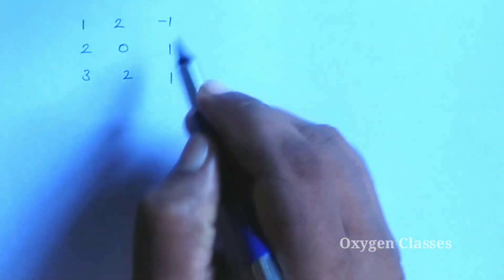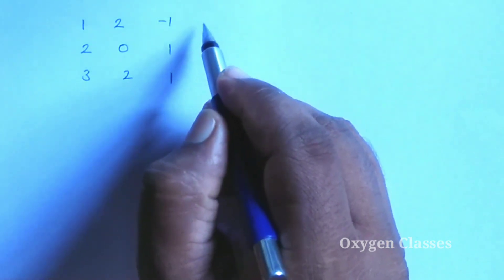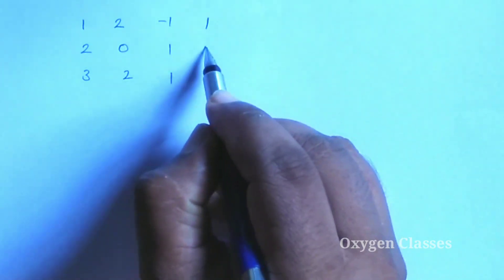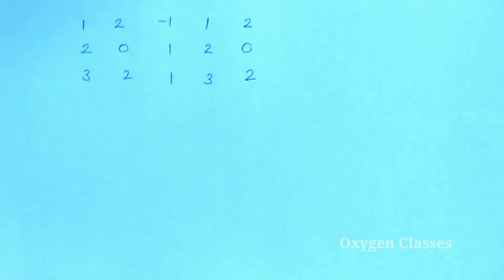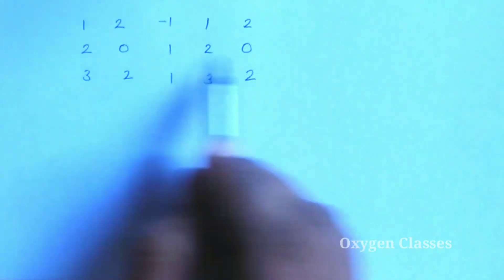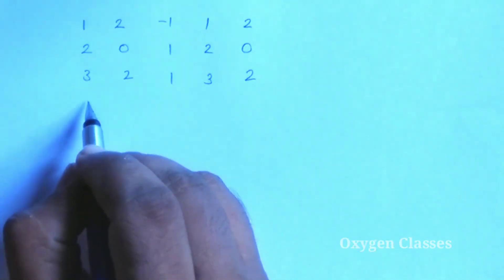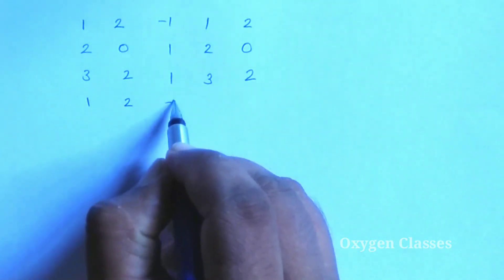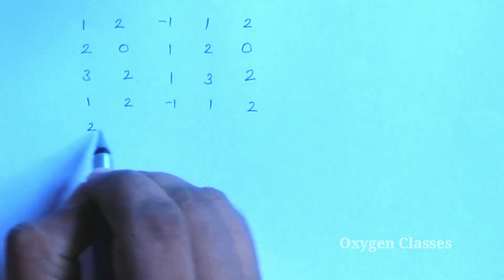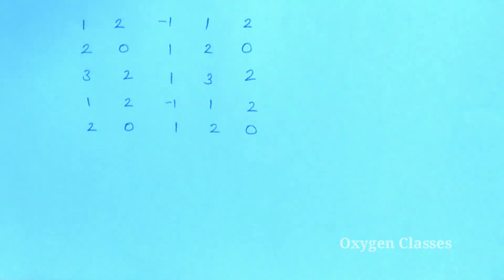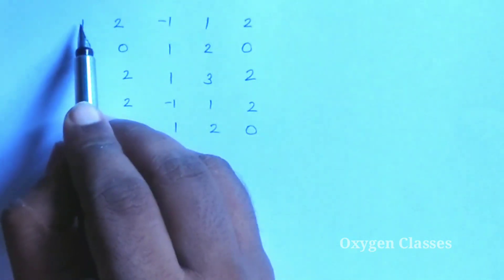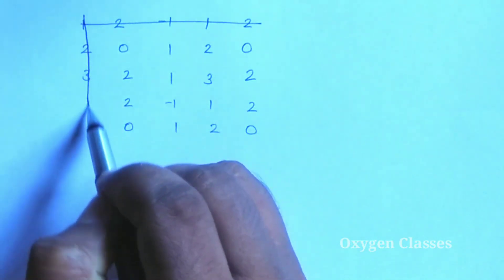This is the first row complete. Now we set up the matrix format. This is the first row, first column of the cofactor matrix.